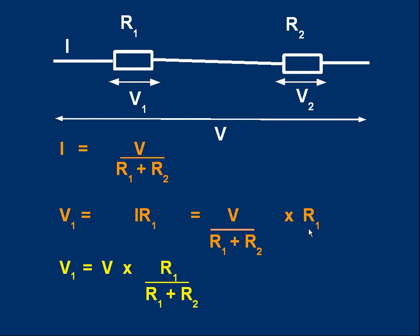And I'm rearranging that into a more conventional way of expressing the formula. V1 is V, the original voltage, times this fraction, resistor 1 over the total resistance, R1 plus R2. Look at that format. It's the original voltage we're splitting up, V, times this fraction, R1 over R1 plus R2. That's the voltage across R1.